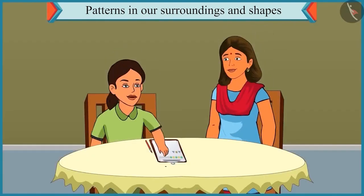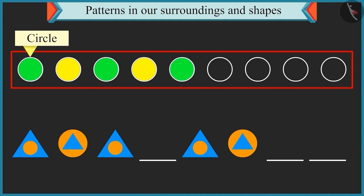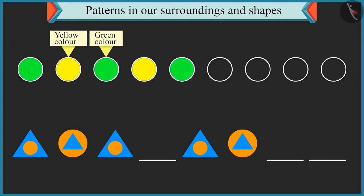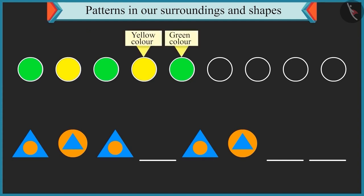Look, Mummy, I have to do this homework. This homework is about patterns which we learned just now. You can do it very easily. Here there are only circles in the first given pattern. I can't identify any pattern here. Look carefully. The circles are filled with colours and these colours are repeated in a particular order. The first circle is filled with green colour, the second with yellow, and the third with green again. The yellow and green colours are repeated in the next circles. Now if you fill the next circles with yellow and green colour and repeat it, the pattern will be complete.